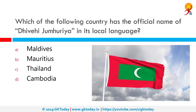Which of the following countries has the official name 'Dhivehi Jumhuriyya' in its local language? That would be Maldives. The Republic of Maldives is situated in an archipelago of approximately 1,190 low-lying coral islands in the Indian Ocean.